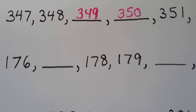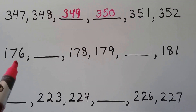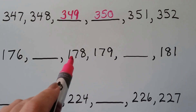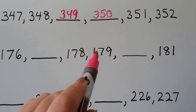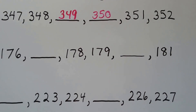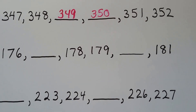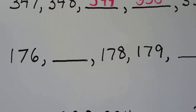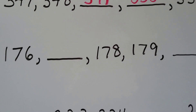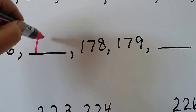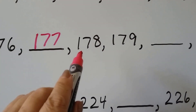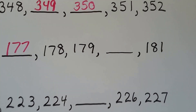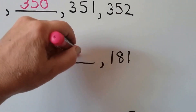What about now? What are these missing numbers? We have 176, then it goes to 178, 179, then there's a missing number and 181. When we're counting, what number do we say after 176? If you said 177, you're right. And then it would be 178, 179. Do you know what that one would be? 180.